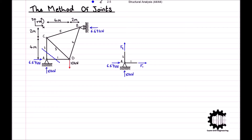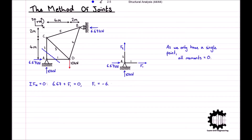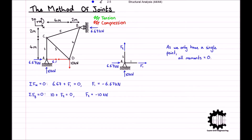Applying the conditions of equilibrium at node A, since we only have a single point, the moment of all forces relative to that point equals zero. Taking the x-direction positive, the sum of horizontal forces gives 6.67 plus F1 equals zero, so F1 equals negative 6.67 kN. Taking y positive, the sum of vertical forces gives 10 plus F2 equals zero, so F2 equals negative 10 kN. Since we assumed tension and both values are negative, bar 1 is in compression at 6.67 kN and bar 2 is in compression at 10 kN.